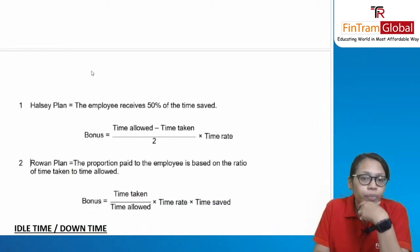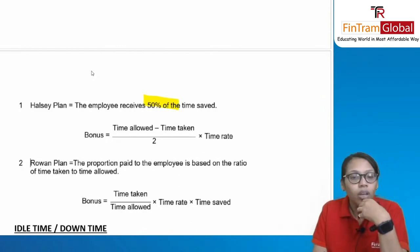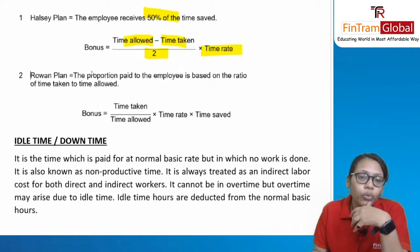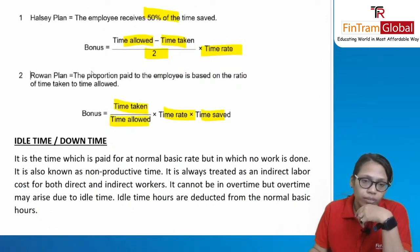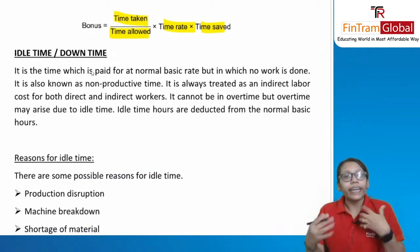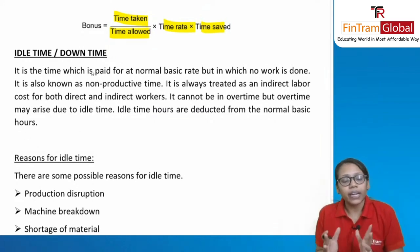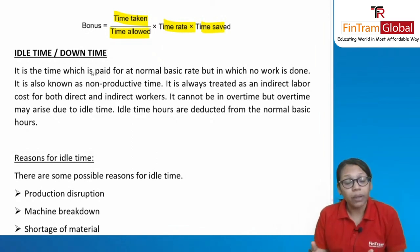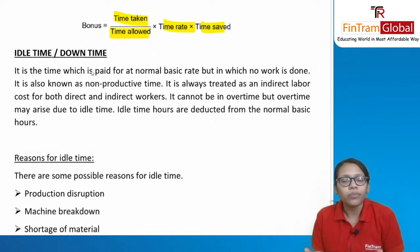Bonus and incentive schemes include the Halsey scheme: bonus = (time allowed − time saved) ÷ 2 × time rate. The Rowan scheme bonus = (time taken ÷ time allowed) × time rate × time saved. Idle time is non-productive time — time paid at normal rate but no work done, also known as non-productive time. It is always treated as indirect labor cost for both direct and indirect labor.